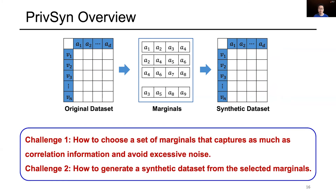The design of PrivSim has two challenges. The first challenge is how to choose a set of marginals that captures as much correlation information as possible and avoids excessive noise. The second challenge is how to generate a synthetic dataset from the selected marginals.